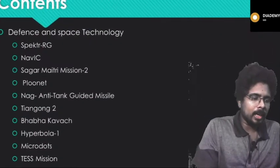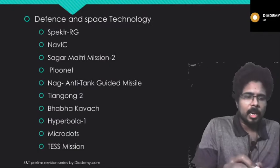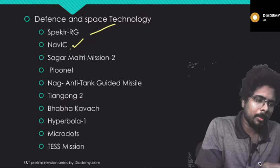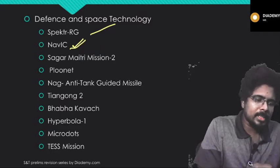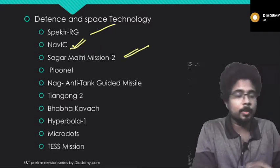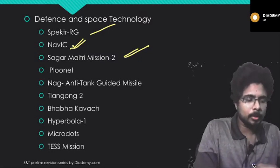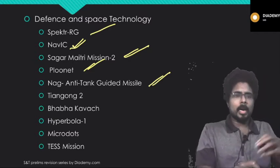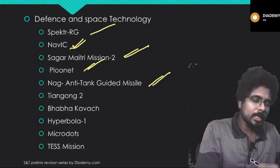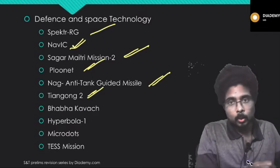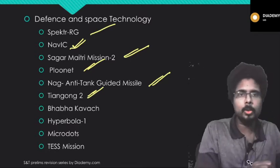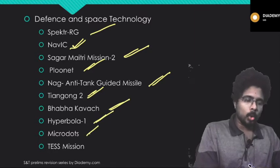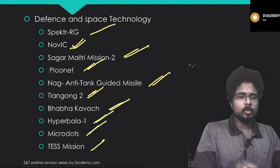The content for our lecture is as follows. First, we will talk about Spectre RG, then NAVIC, then the Sagar Maitri Mission — who sent it and all. Then we will talk about PLUNET, the NAG anti-tank guided missile, Tiangong 2, what it is and which country launched it. Then we will talk about Baba Kavach, Hyperbola 1, Microdots, and the TESS mission.